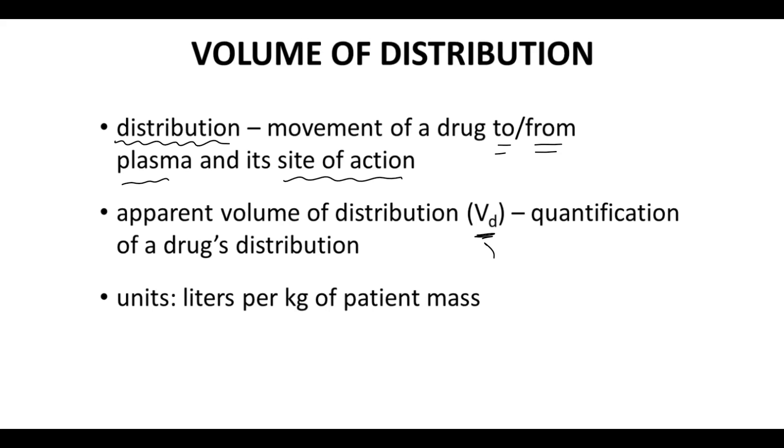The units for volume of distribution are typically liters per kilogram. You might see a drug reported as just liters, but just like clearance, we typically divide this by the mass of the patient.